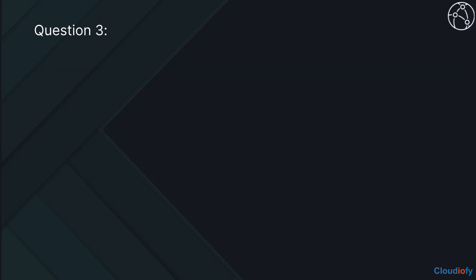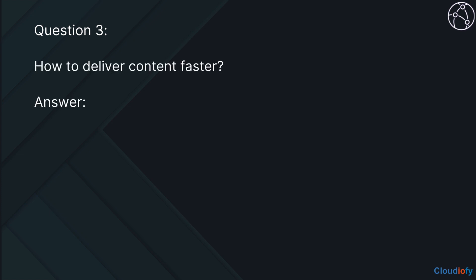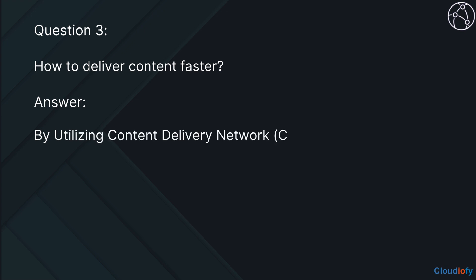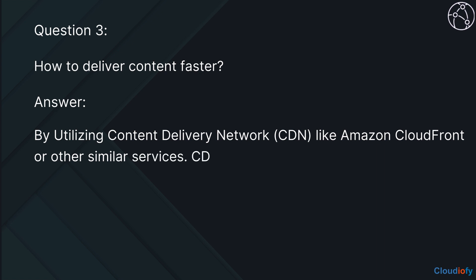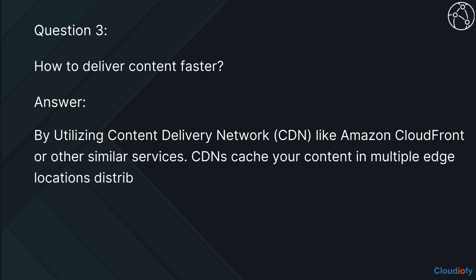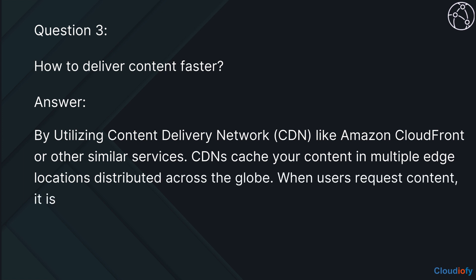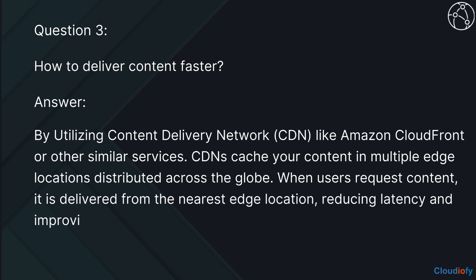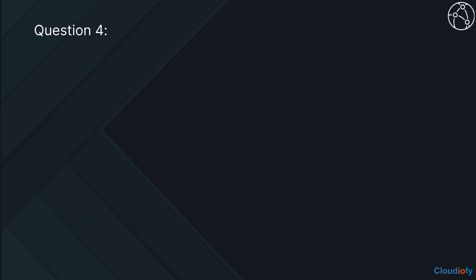The next question is, how to deliver content faster? By utilizing a content delivery network like Amazon CloudFront or other similar services, CDNs cache your content in multiple edge locations distributed across the globe. When users request content, it is delivered from the nearest edge location, reducing latency and improving response times.